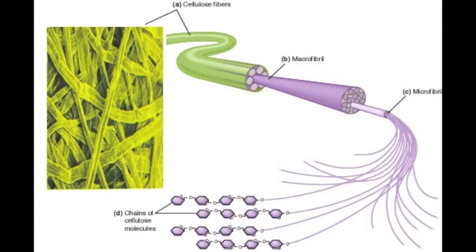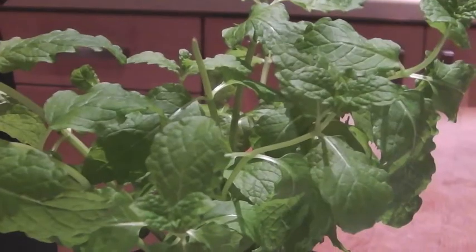Cellulose forms microfibrils from chains of beta-glucose molecules. These microfibrils provide a very strong material that has many uses such as the cell wall of plant cells.